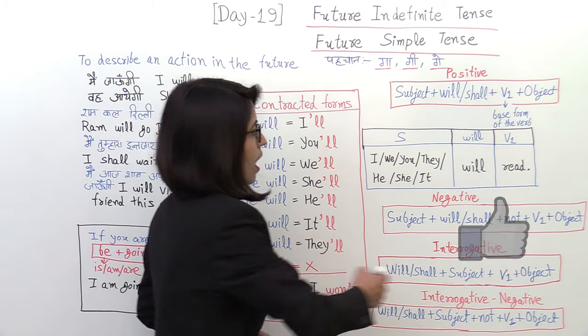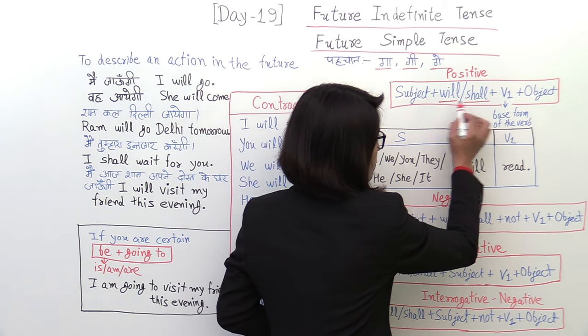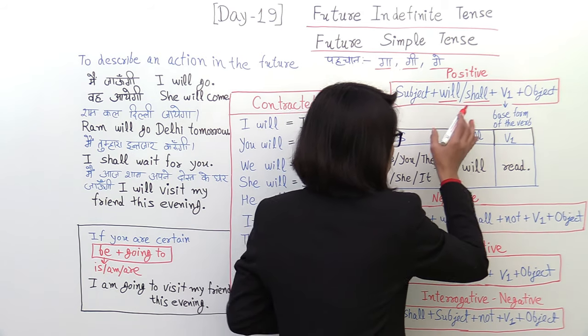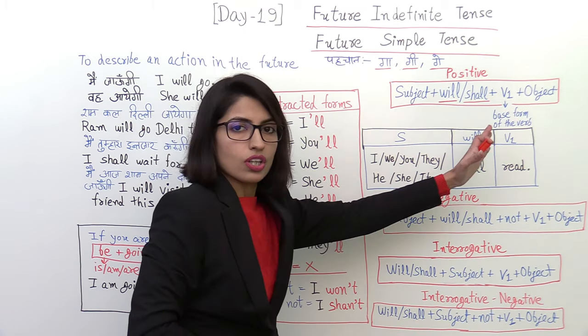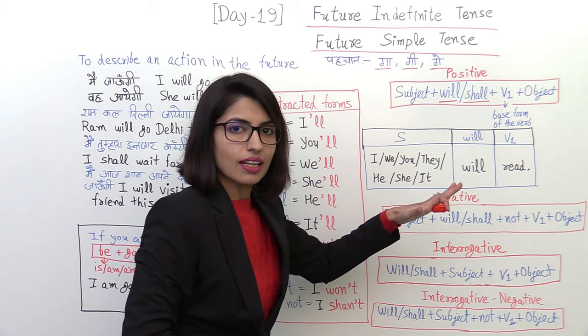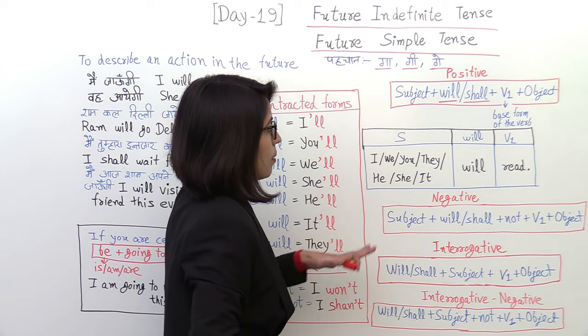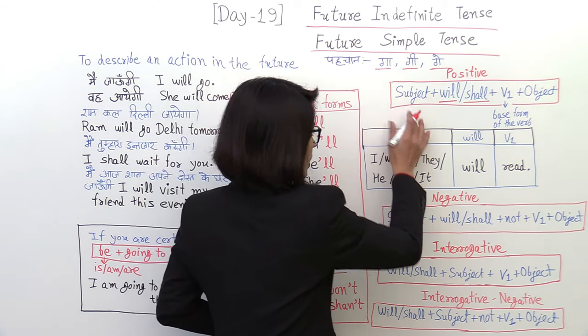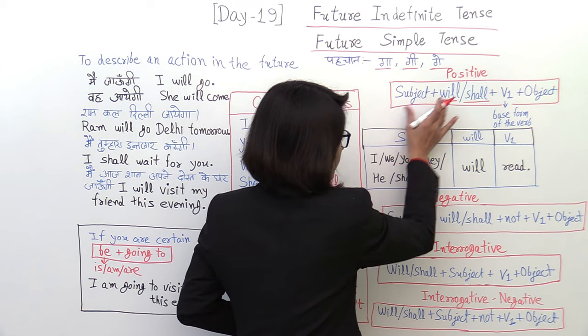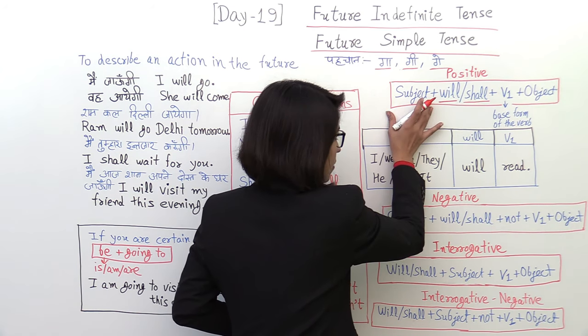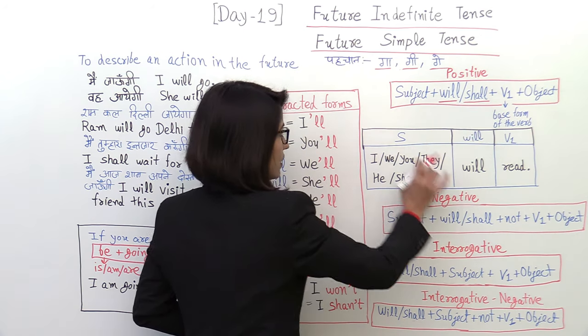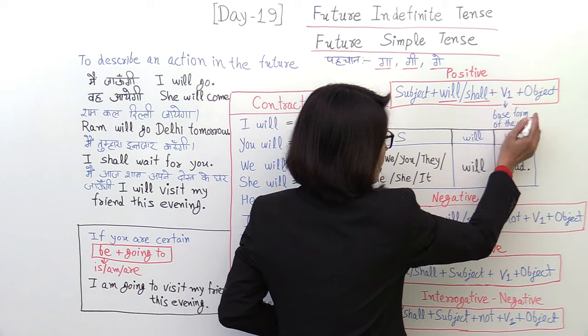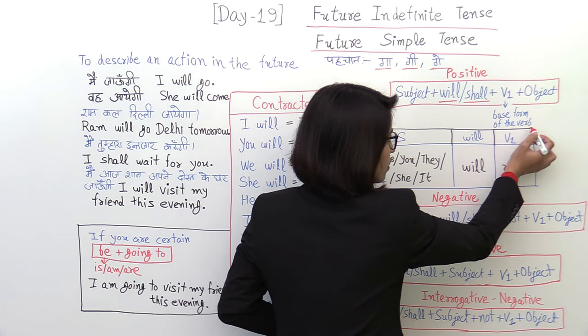You will understand from this. You can use them all the time when you decide something. It means that those things are not planned. And you simply say those sentences that I will do this. The structure is first of all, this is the positive sentence. The subject, will or shall.